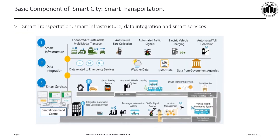Smart Transportation is developed on the base of three components: Smart Infrastructure, Data Integration, and Smart Services. Smart Infrastructure includes multi-modal transport, automated traffic signals, automated toll, and fare collection. Data Integration drives the system, incorporating weather data and traffic data, linking emergency service data as well as information from government services. Smart Services offers different benefits to citizens such as smart parking system, vehicle locating system, driver monitoring system, and route diversion alert.